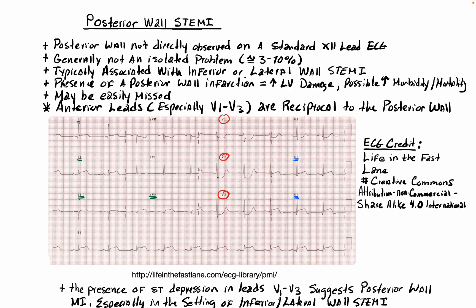That's why we see posterior MI more often than not associated with inferior, lateral, or infralateral myocardial infarctions. The presence of a posterior wall infarction is going to cause increased damage to the left ventricle and may increase morbidity and mortality. However, an isolated posterior wall STEMI may be easily missed because we might write it off as an NSTEMI, unstable angina, or a non-occlusive myocardial infarction. So what we're going to do is look at the anterior leads — specifically V1 through V3 — because these are directly reciprocal to the posterior wall.